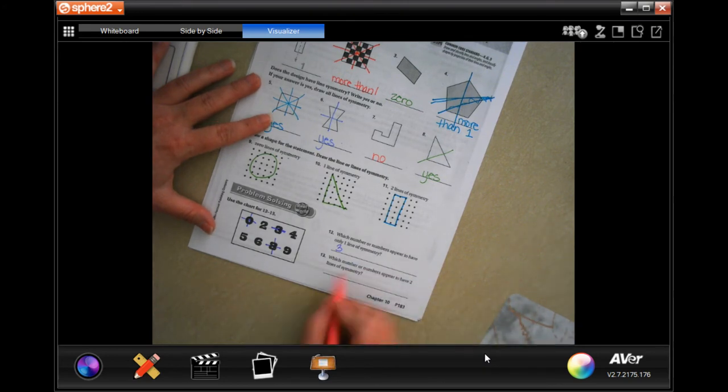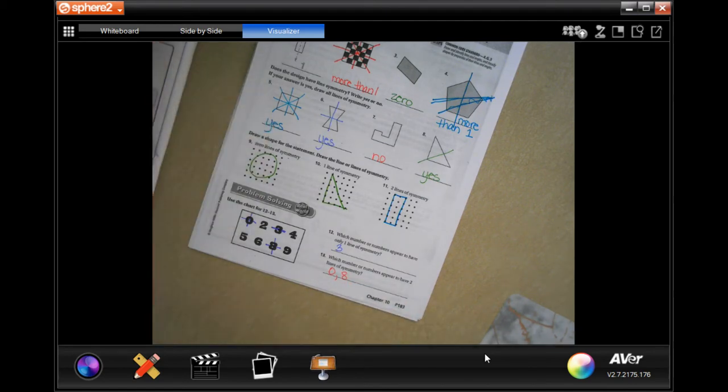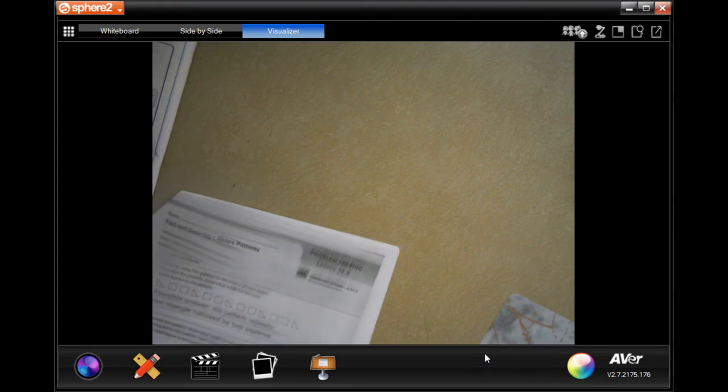Which number or numbers appear to have two lines of symmetry? Well, that's going to be the zero and the eight. All right, we're going to go on to the bath where you guys are going to do the lesson check, and we're going to do this power review together.